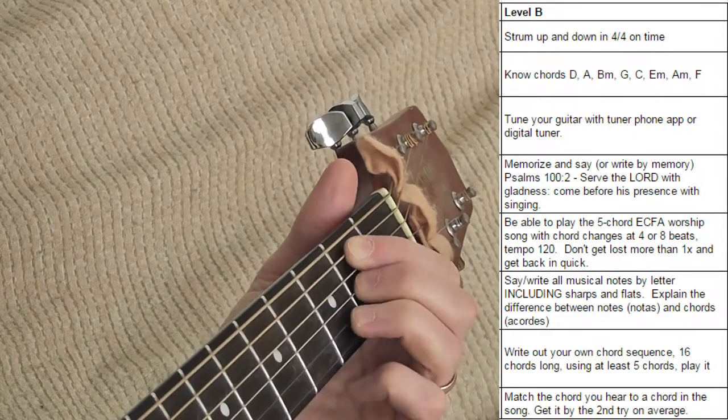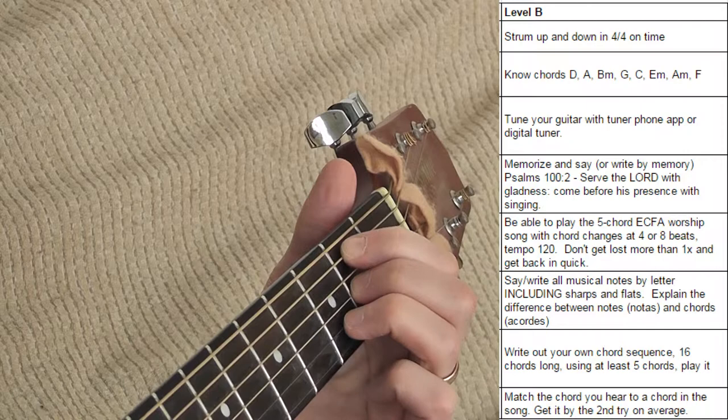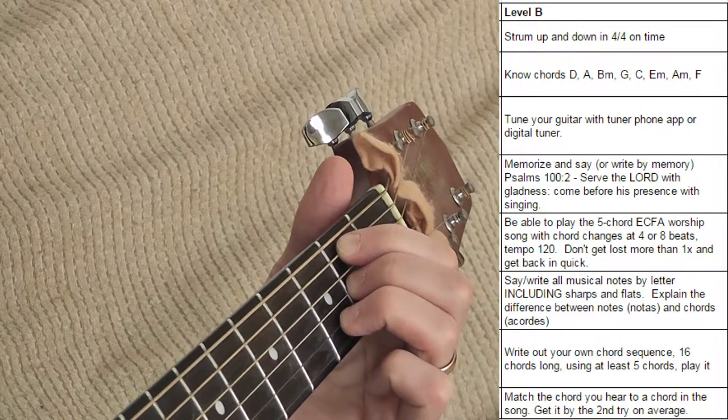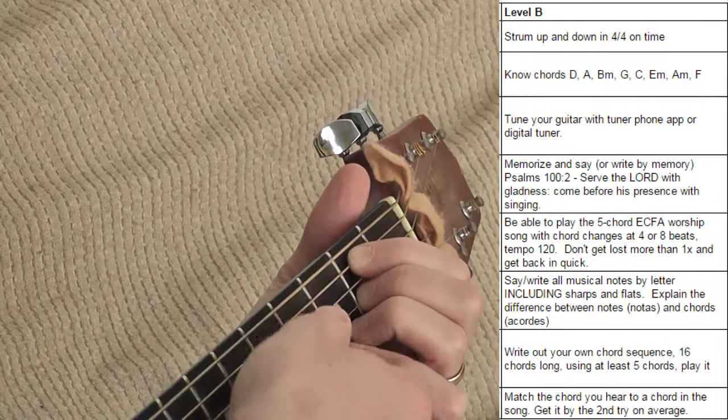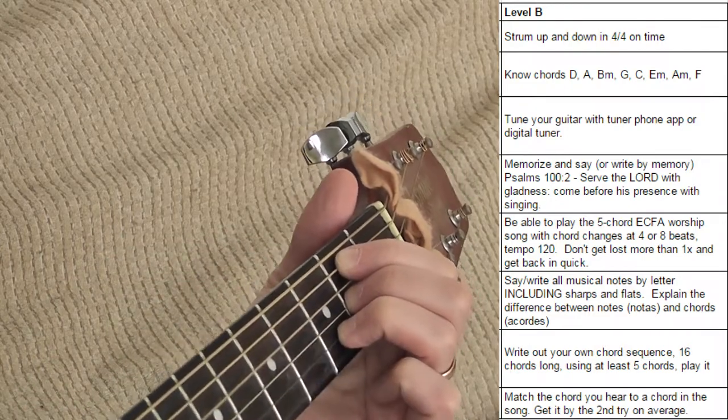Now we need B minor. This is the way that we do B minor. It's kind of a cheater B minor. Don't play this top string. Just only play these four, not five. Play those five strings.